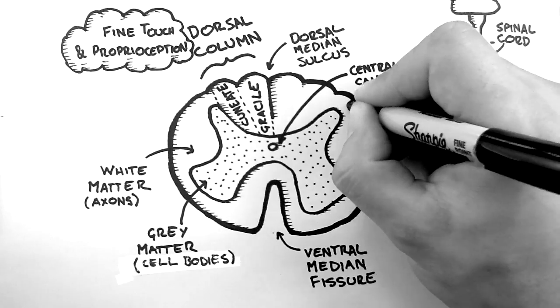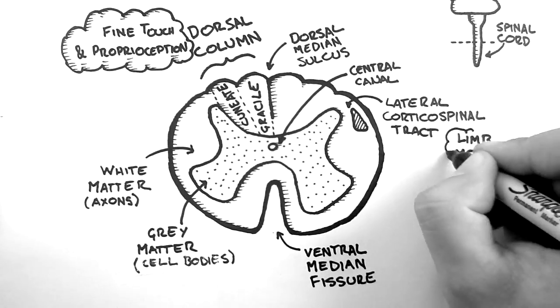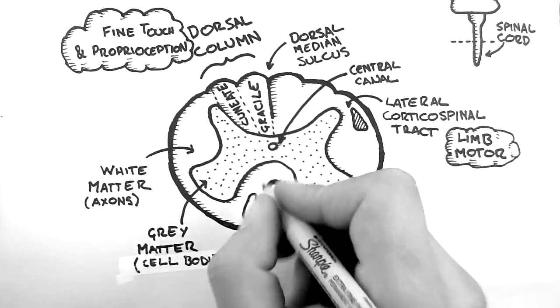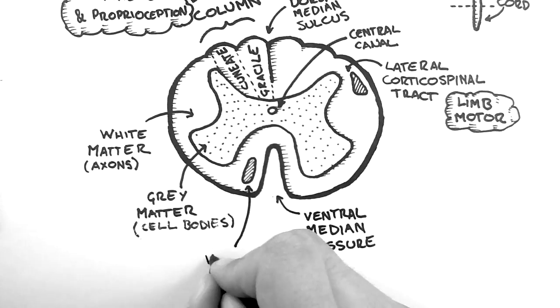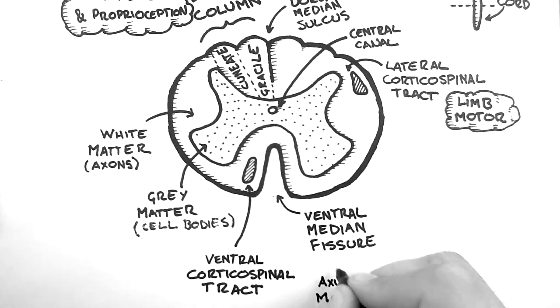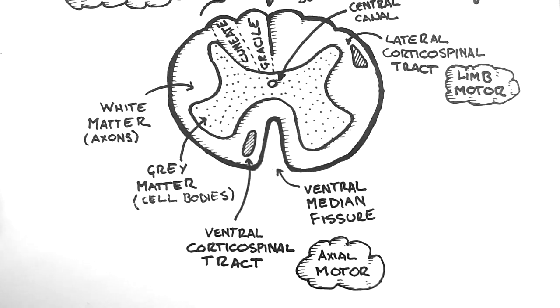Moving along, off to the side here we have the lateral corticospinal tract, which carries limb motor or limb movement information. And alongside the ventral median fissure, we have the ventral corticospinal tract, which carries motor information to the axial muscles, essentially every muscle that doesn't involve the limb.